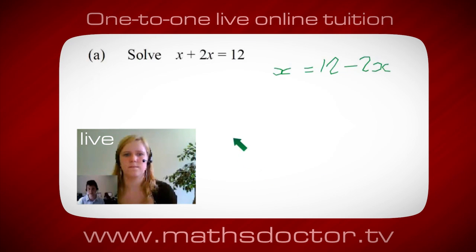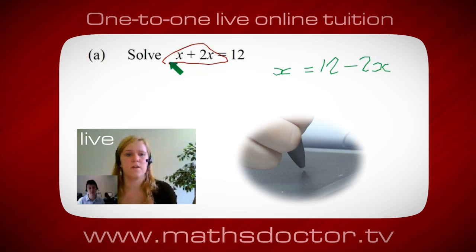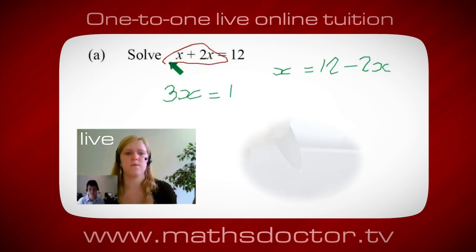A lot of the time we want to get x by itself, but what we want to do first is get all of these x's together. So can you see anything we can do with this, get all these together in one place? Oh okay, it's 3x isn't it? Yeah, absolutely. So 3x equals 12, oh and so x equals 4. Brilliant, spot on, well done.